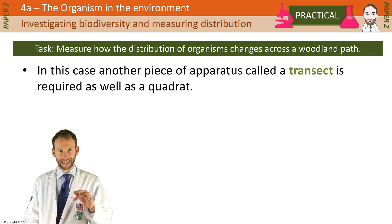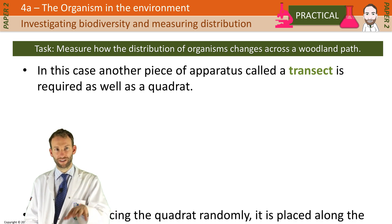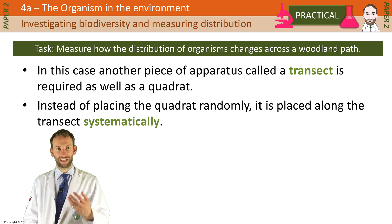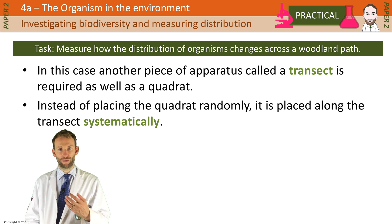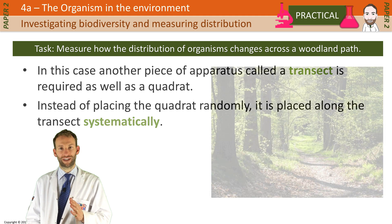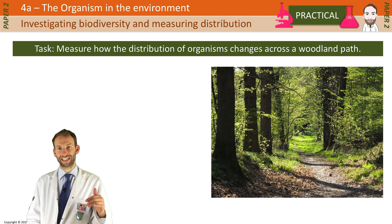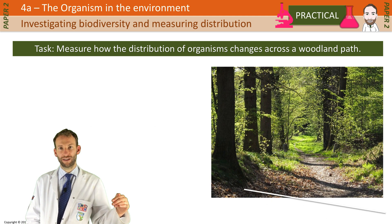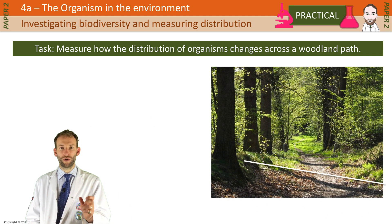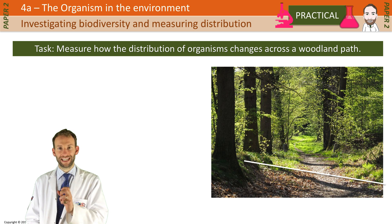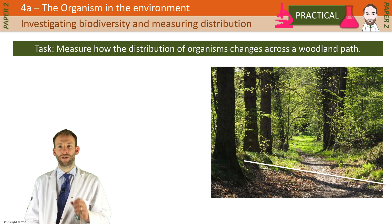Instead of placing quadrats randomly in an area to get a general idea of the sample, you're going to place these quadrats systematically along the transect. So you put a transect down along the woodland path, and look at what species are present in each of your quadrats as you move the quadrat along the transect.